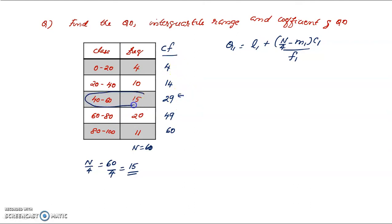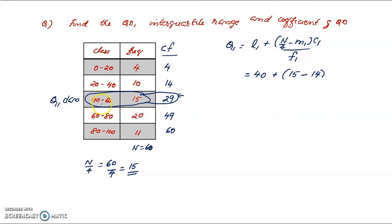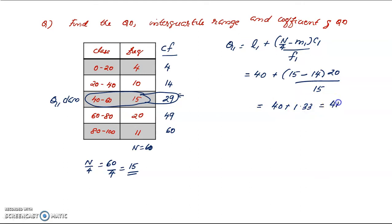We identify the Q1 class. N by 4 is 60 by 4, which is 15. The 15th observation falls in the class 40–60, with lower limit L1 of 40. Substituting: 40 plus 15 minus M1, where M1 is 14 (cumulative frequency of previous class), into C1 of 20, divided by frequency 15. Q1 equals 40 plus 1.33, so Q1 equals 41.33.